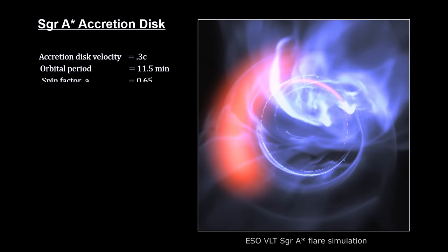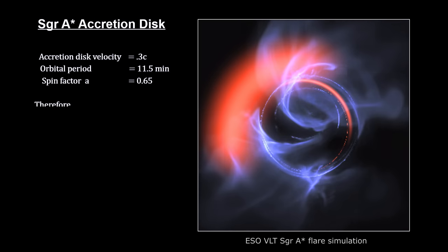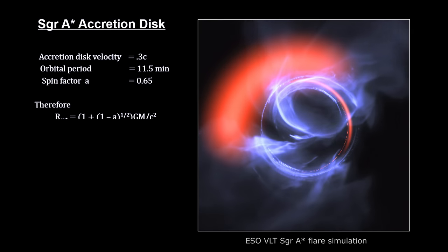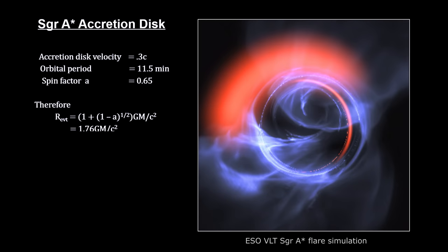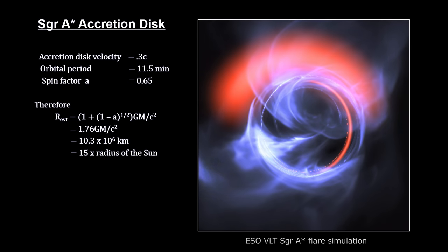This makes the 4 million solar mass Sagittarius A star a supermassive Kerr black hole. This new information also enabled calculating the distance from Sagittarius A star's center to its event horizon at around 10 million kilometers,